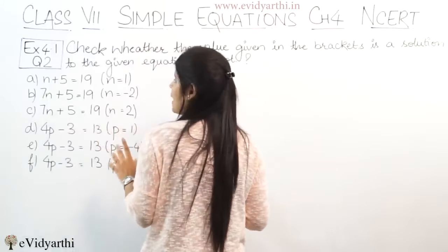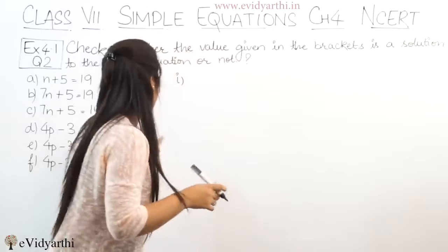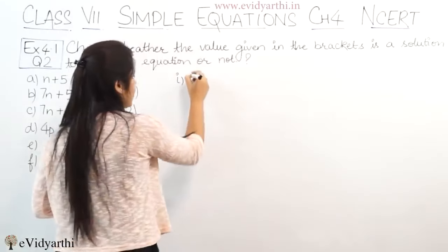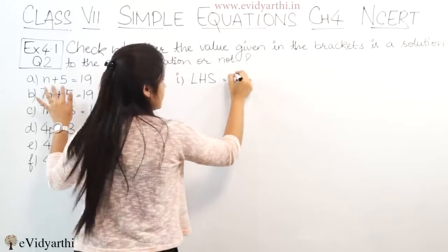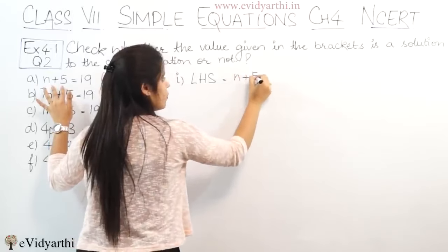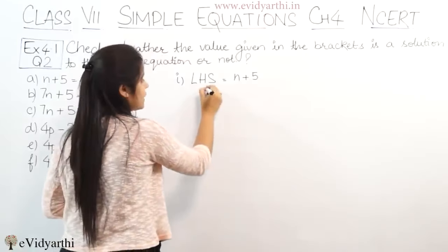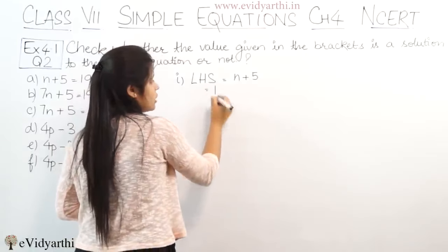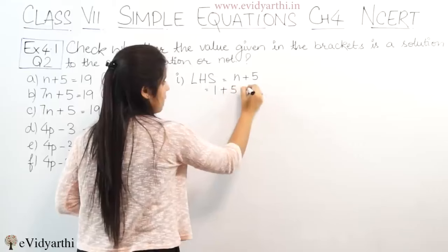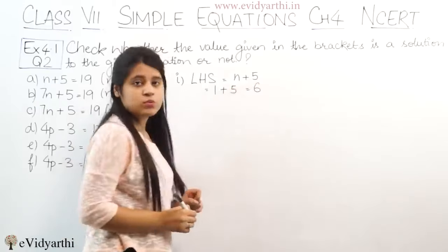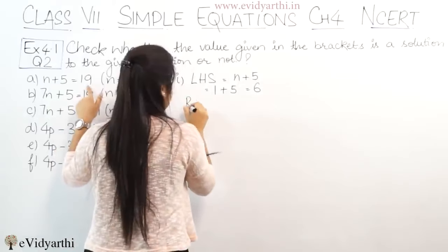We need to check: n plus 5 equals 19, and the value given is n = 1. First, we look at the left hand side, which is n + 5. Putting the value of n, n is 1, so 1 plus 5 equals 6. And what is the RHS given? It is 19.